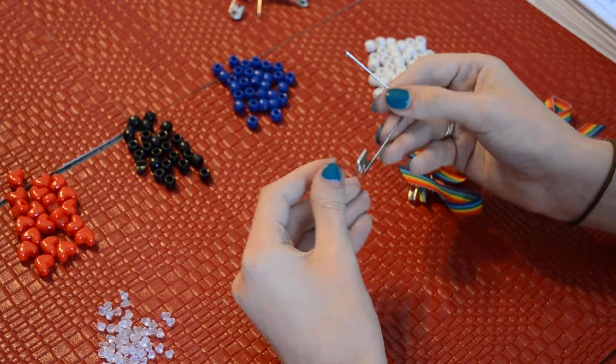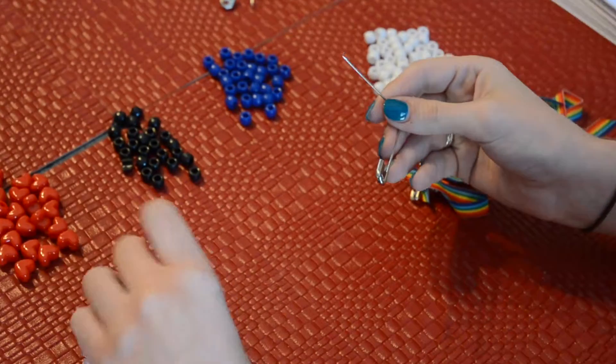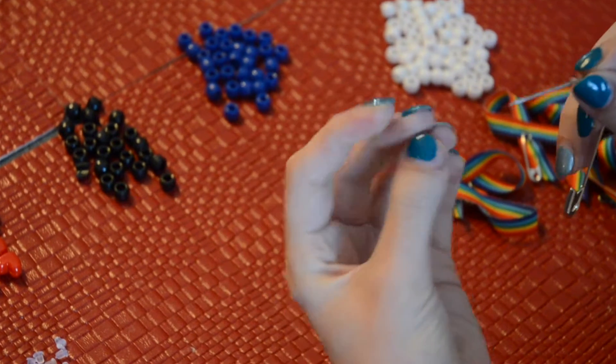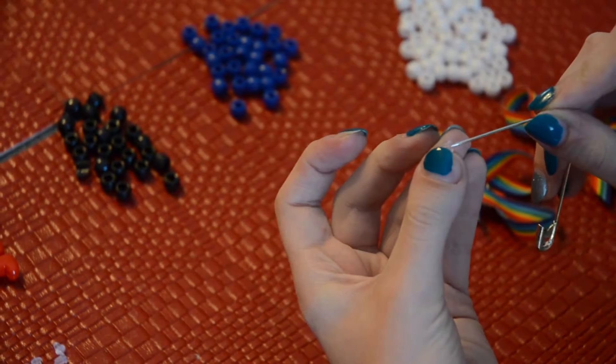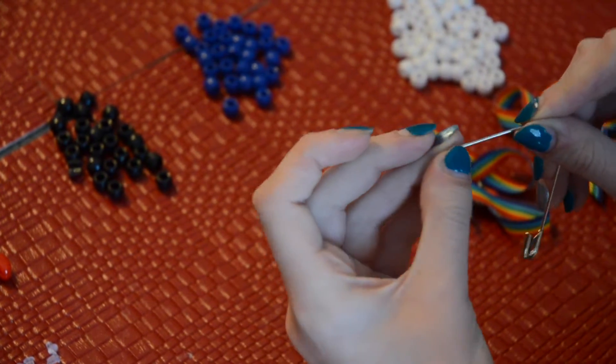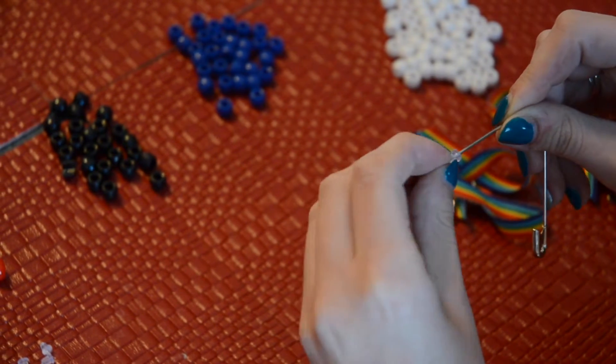And then you take your stopper, and you start with the big end first on this side, and there is a hole. This is an earring, a pierced earring backing, so it's already got a hole in it.